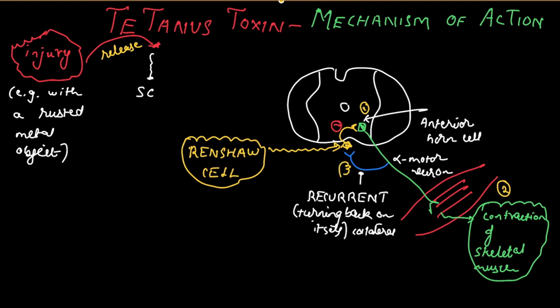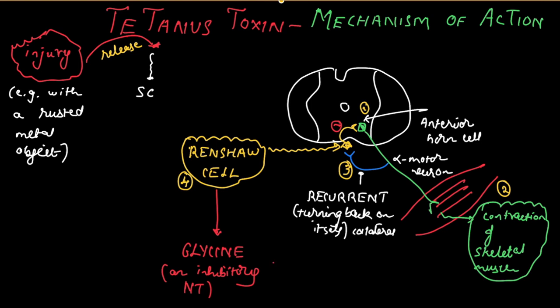The alpha motor neuron causes contraction of the skeletal muscles. There is a recurrent collateral that synapses on the Renshaw cell, which keeps the alpha motor neuron in check. It does this by releasing an inhibitory neurotransmitter — glycine. Glycine is the most common inhibitory neurotransmitter in the spinal cord, and it keeps the alpha motor neuron in check, so contraction of the skeletal muscle is optimum and optimum tone is maintained.